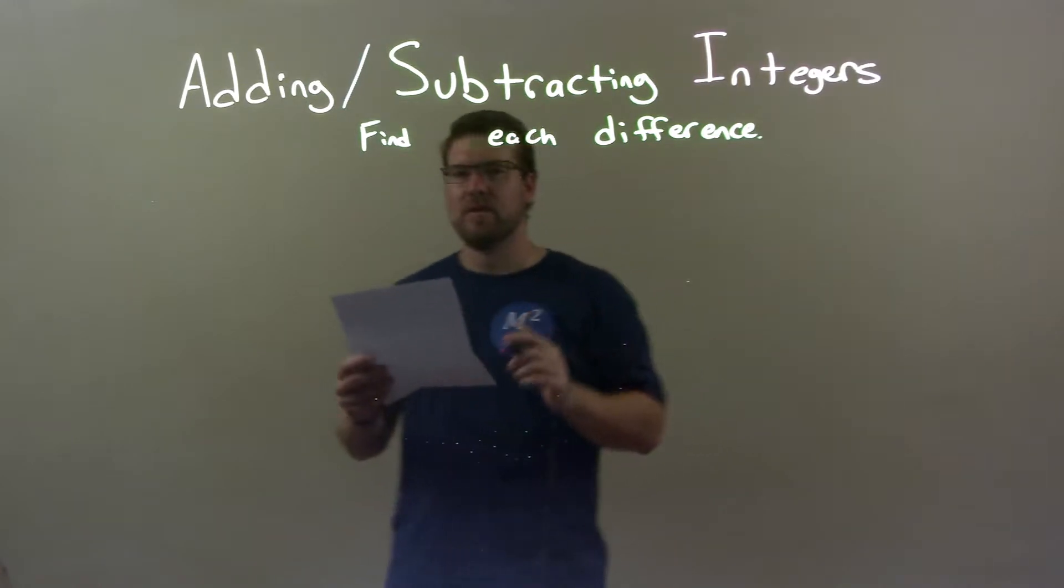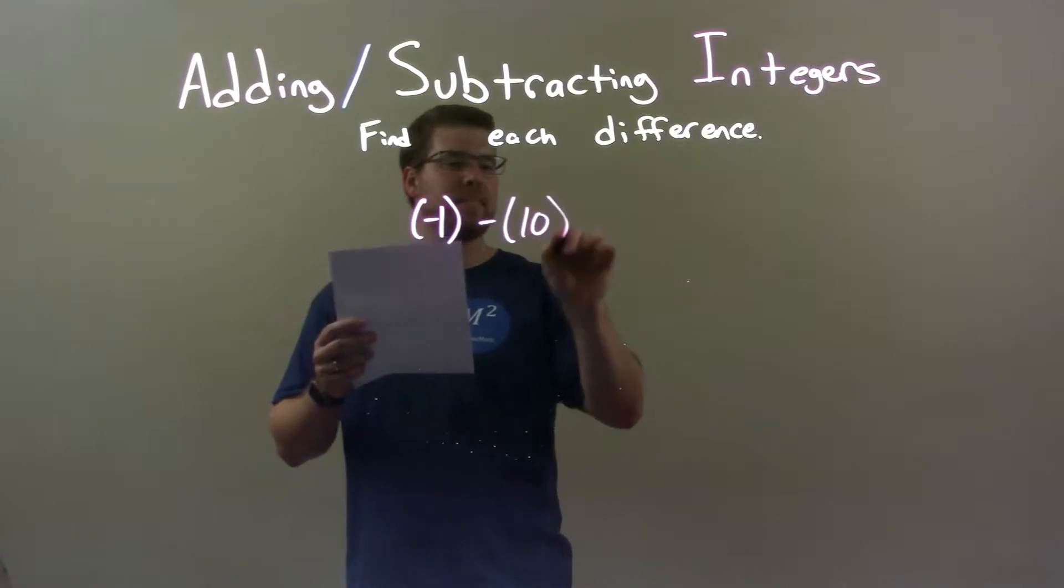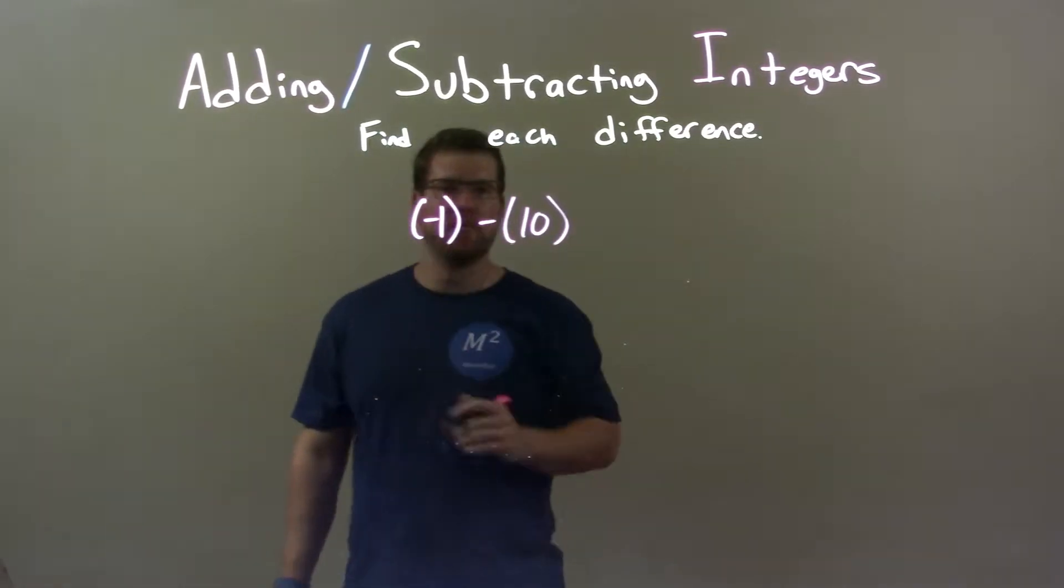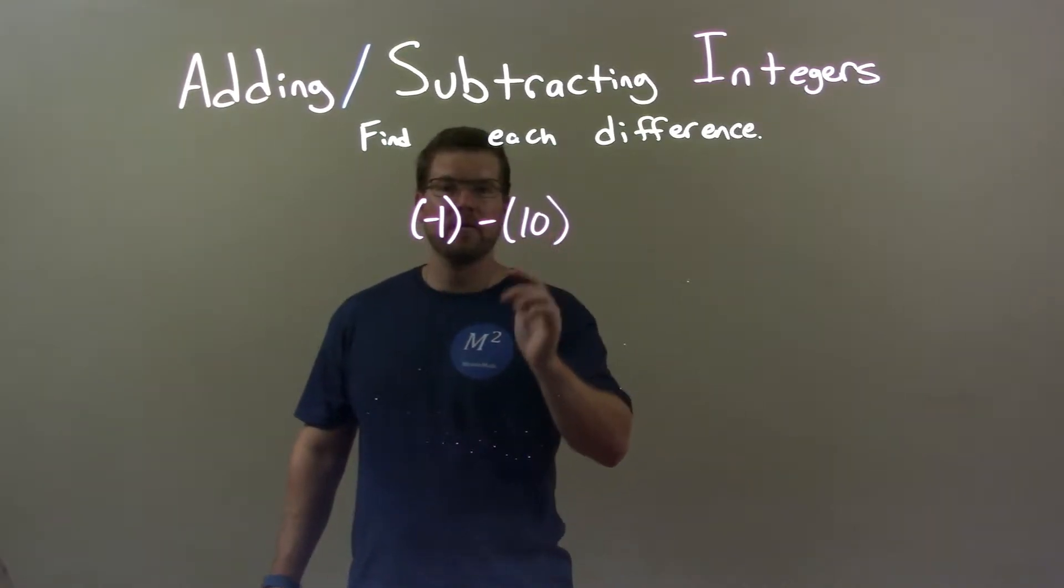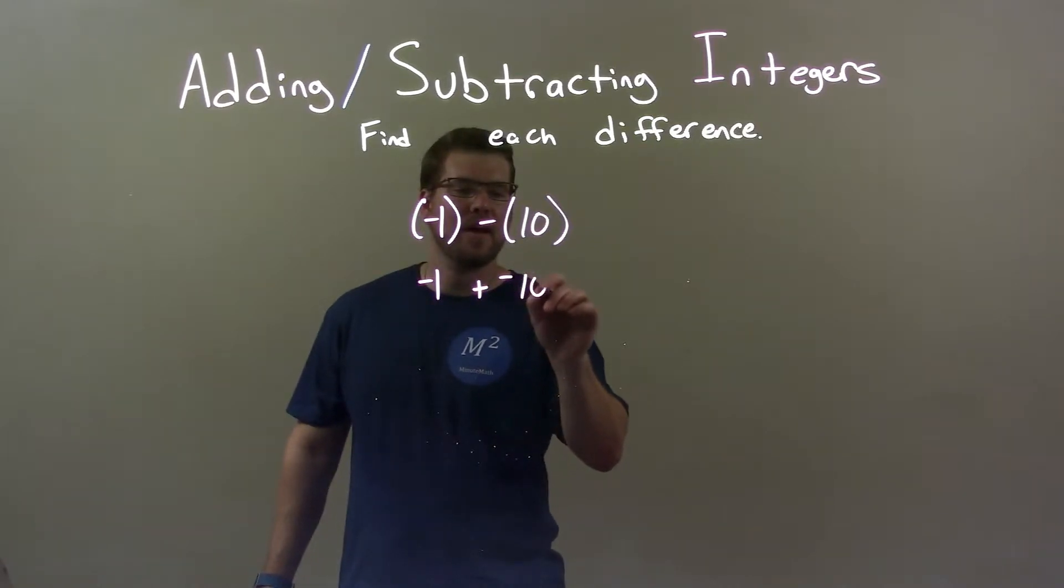So if I was given these two integers: negative 1 minus 10. One thing we know about subtraction - we already have a negative right here. So for subtracting a positive number from a negative, that's the same thing as that negative plus a negative 10.